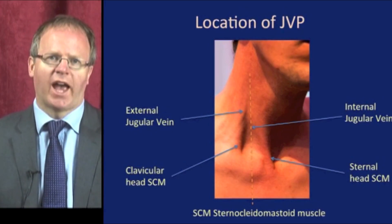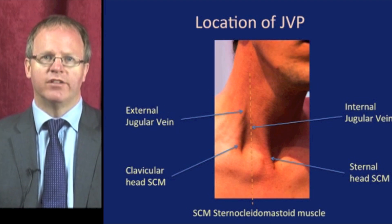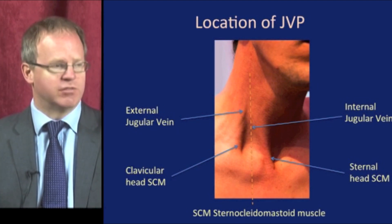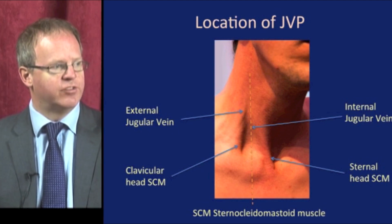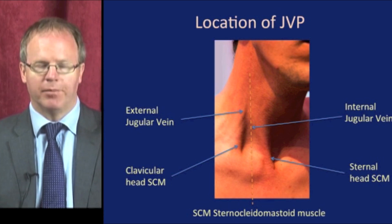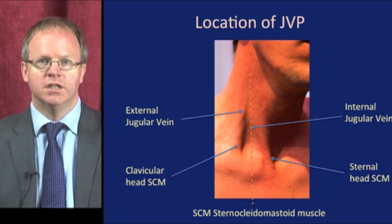In order to locate the JVP, its position relative to the other neck structures needs to be clear. This diagram shows the relationship with the two heads of the sternocleidomastoid and the internal jugular vein passing up between them above the clavicle. To produce a consistent result, the height needs to be compared to a fixed anatomical structure. By convention, the sternal angle is used as the point of reference, as it is at the level of the right atrium. The difference is read in vertical centimetres.